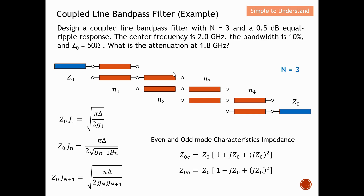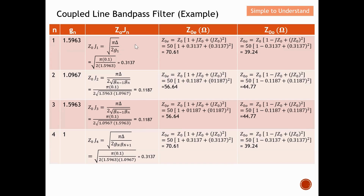In the second video I gave a worked example. The task was to design a filter with n equal to 3. For a coupled-line bandpass filter with n=3, you need n+1 coupled line sections, so four sections are required: n1, n2, n3, and n4. I then showed the formulas used to calculate the even mode and odd mode characteristic impedances for each section.